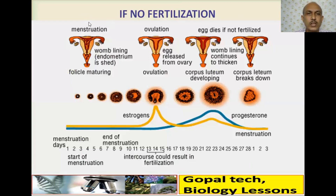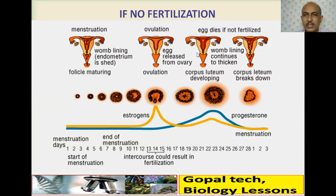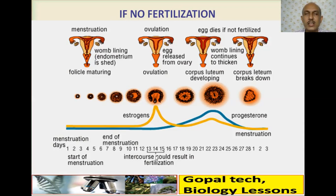Once menstruation stops, follicles develop for regeneration of new ova and the new uterine lining forms. When the egg is released from the ovary, if fertilized, it develops into a baby; if not fertilized, the egg dies. The cycle repeats every 28 days. The 14th day is considered the ovulation period, during which intercourse could result in fertilization. If fertilized, the thickening continues; if not, the thickening stops and the uterine layer breaks down.